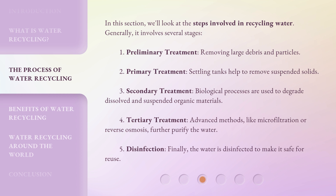3. Secondary Treatment: biological processes are used to degrade dissolved and suspended organic materials. 4. Tertiary Treatment: advanced methods, like microfiltration or reverse osmosis, further purify the water. 5. Disinfection: finally, the water is disinfected to make it safe for reuse.